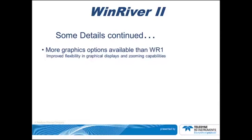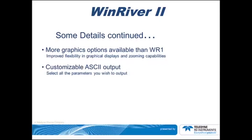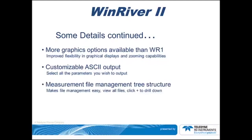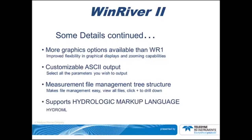You can see the entire dataset on the screen at one time, zoom into a portion of interest, or scroll backwards and forwards through the data. There are more graphs available than in WinRiver 1. One capability of great interest is the ability to output virtually any data from the raw data file, such as velocities, depths, and GPS data. The measurement file management works like Microsoft's tree structure — click the plus symbol to drill down — and handles all pertinent data files transparently. WinRiver 2 also supports the hydrologic markup language, allowing data to be exported in XML format.